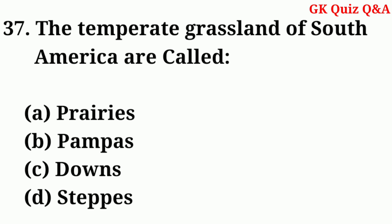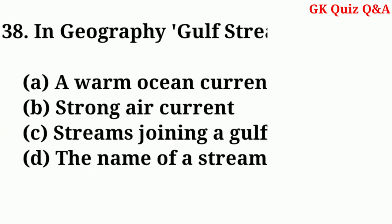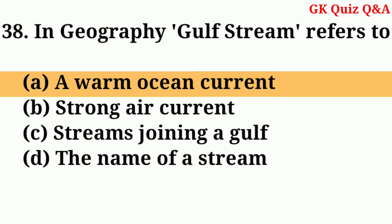Llanos are the grasslands of? Answer: D — Chile. The temperate grasslands of South America are called? Answer: B — Pampas. In geography, gulf stream refers to? Answer: A — A warm ocean current.